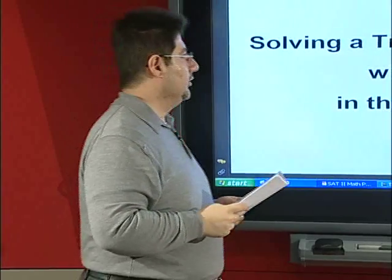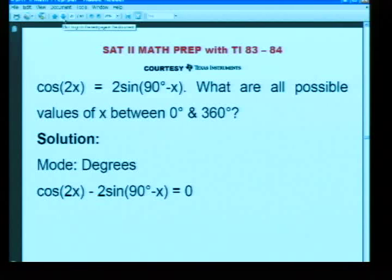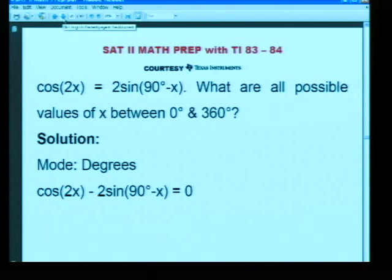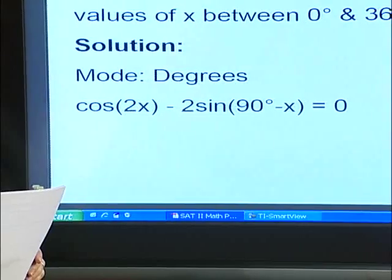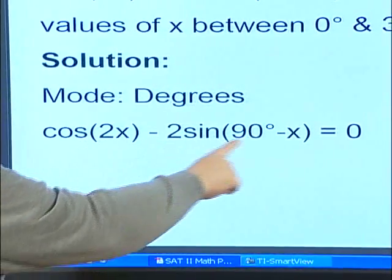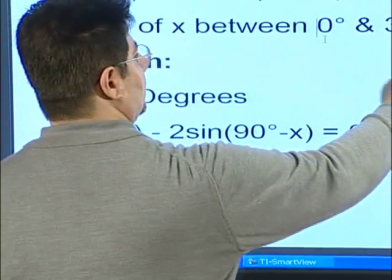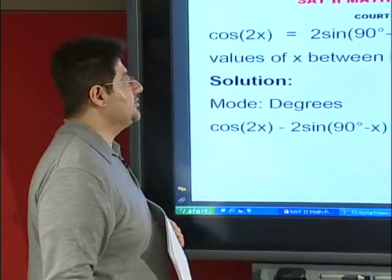Now we move on to solving a trigonometric equation in degree mode. We are given the equation: cosine(2x) equals 2 sine(90 degrees minus x). We are asked to find all values of x between 0 degrees and 360 degrees. First, we must set our angle mode to degrees. Then we take the right-hand side to the left to get: cosine(2x) minus 2 sine(90 degrees minus x).